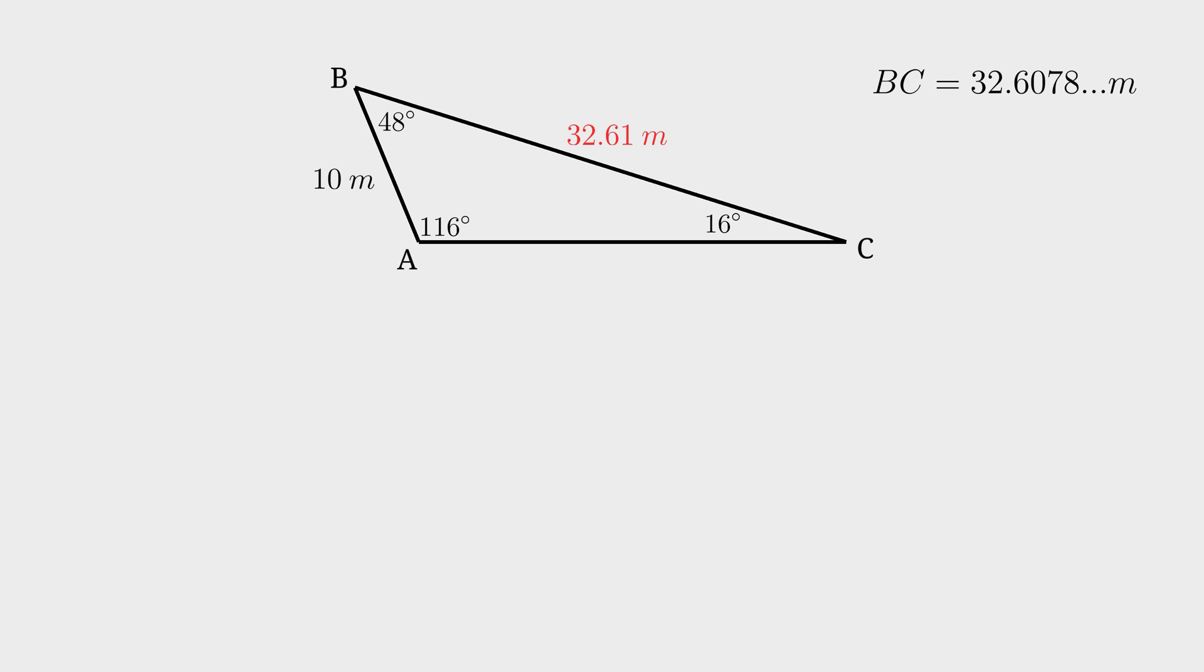you can use the cosine or the sine rule. To keep things interesting, I'm going to use the cosine rule this time around. To use the cosine rule, you need two side lengths and an angle between them. The length that we want to work out is the opposite side of the 48-degree angle. The cosine rule takes this form.